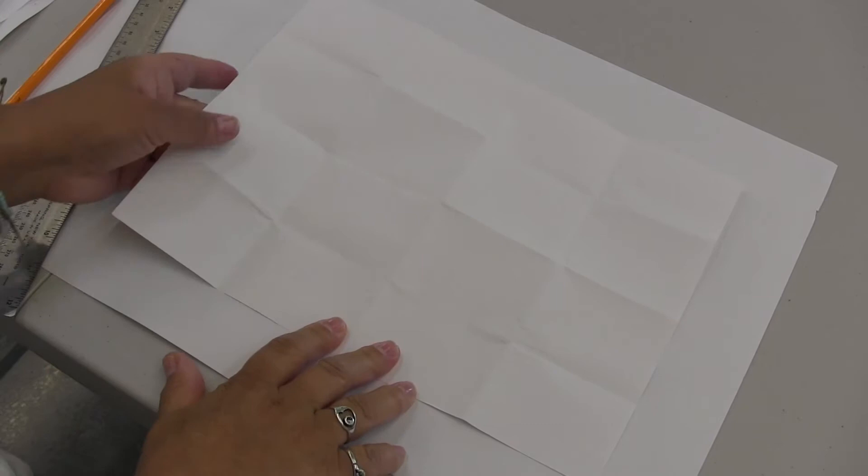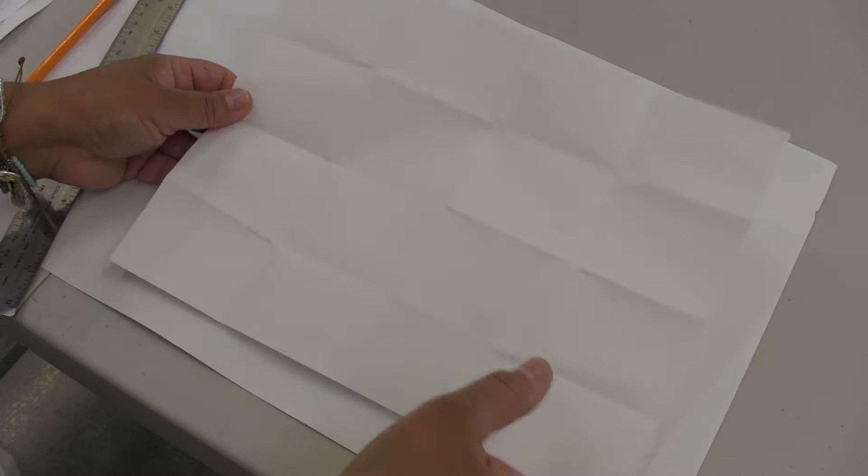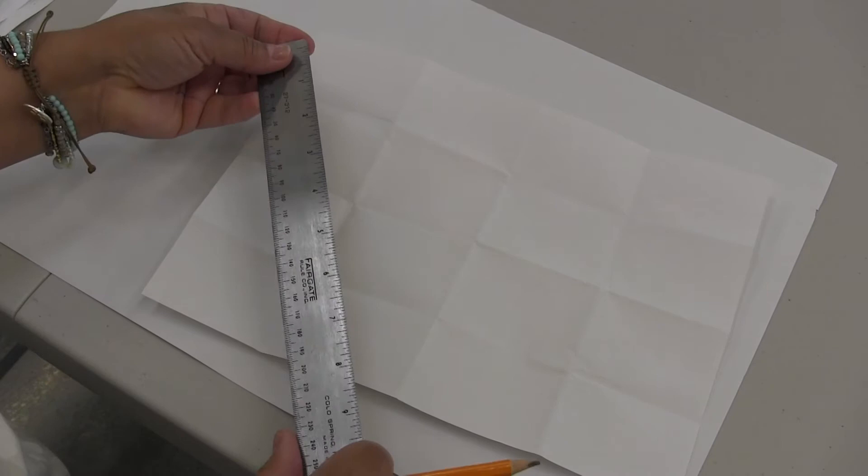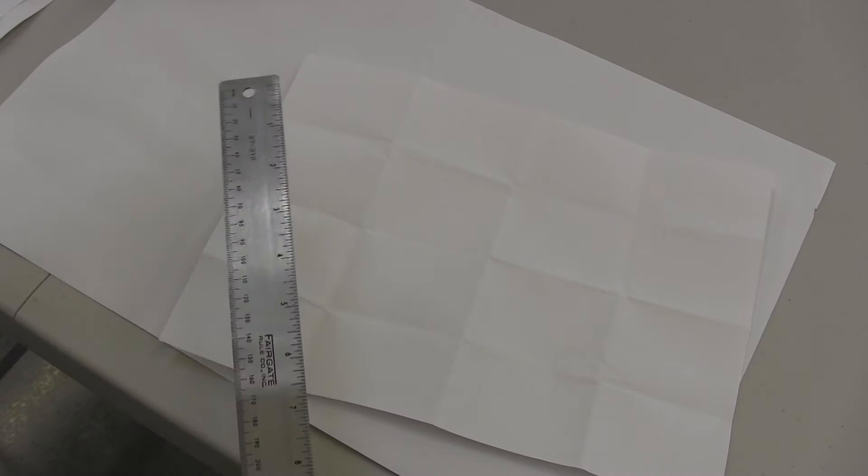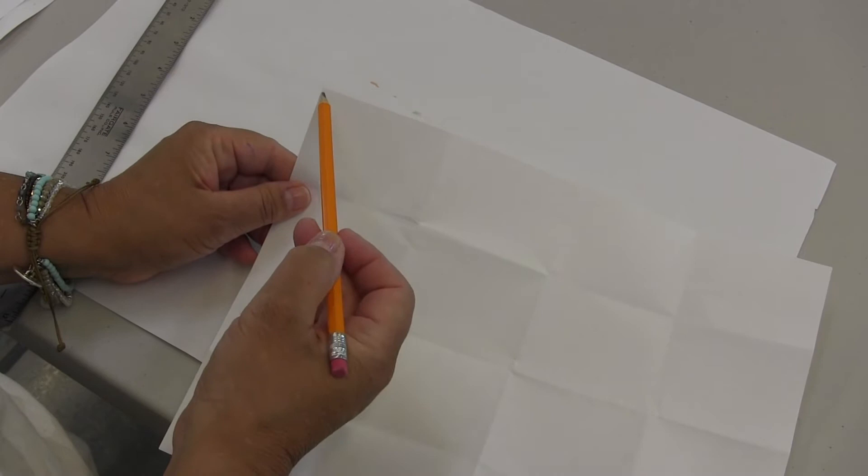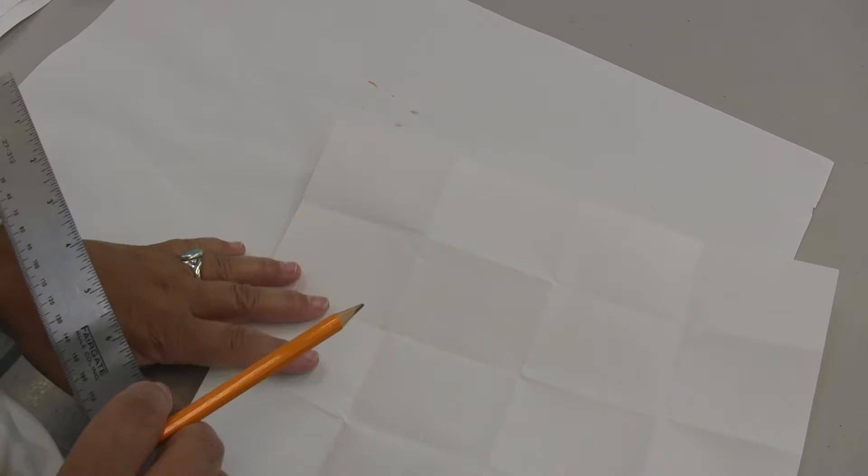Once you have all your squares made by folding your paper, we've got to take a pencil and a ruler. If you don't have a ruler, a piece of paper actually works like a ruler. I can use the edge of my paper and do lines with it. But I'm going to use my ruler. What we're going to do in each little square is make very straight X's. I'm going to go with my ruler and make an X in each box.